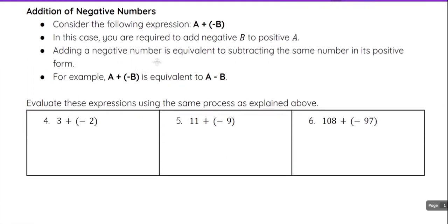Additionally, we have addition of negative numbers. With addition of negative numbers, we want to consider the following expression. If we start with a plus negative b, you are required to add a negative b to a positive a. Adding a negative number is the same as subtracting the same number in its positive form. So a plus negative b is the same as a minus b — plus a negative is essentially the same as subtraction.